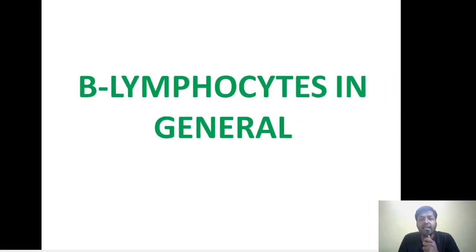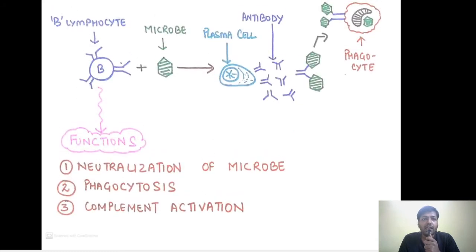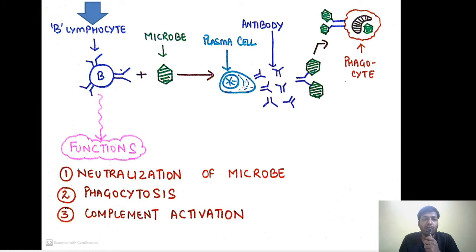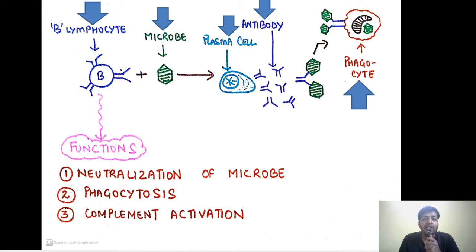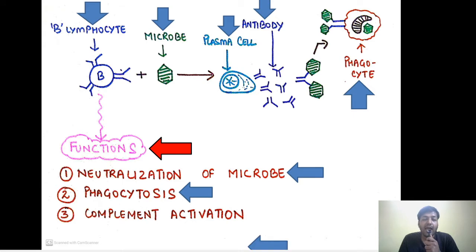The B lymphocyte has antibodies serving as receptors on its surface. Once it encounters a microbe, it differentiates into a plasma cell, which secretes antibodies. These antibodies coat the microbes, directing them to phagocytes for phagocytosis. The three important functions of B lymphocytes are: neutralization of microbes, phagocytosis, and complement activation.